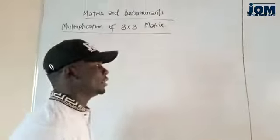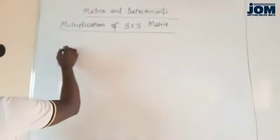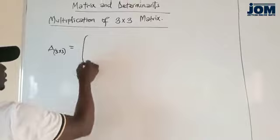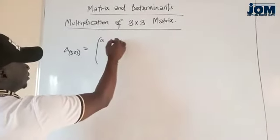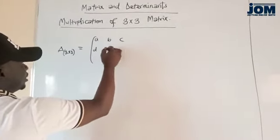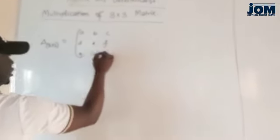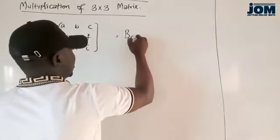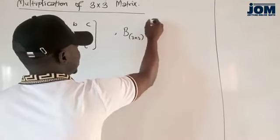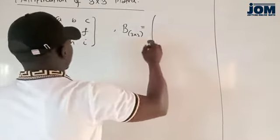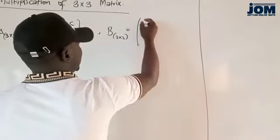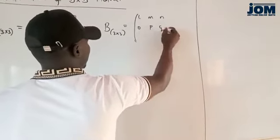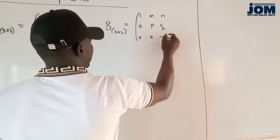So, if we have a 3x3 matrix A equal to A, B, C, D, E, F, G, H, R, and another matrix B, which is also a 3x3, equal to L, M, N, O, P, Q, R, S, T.